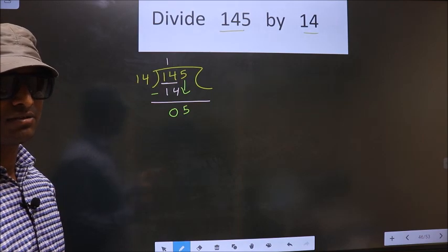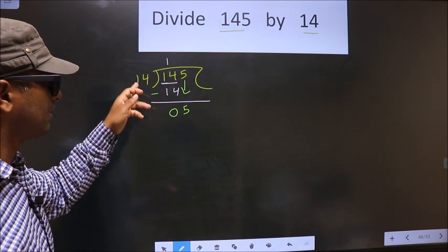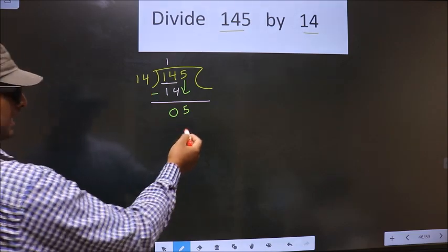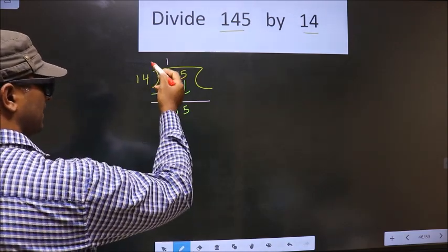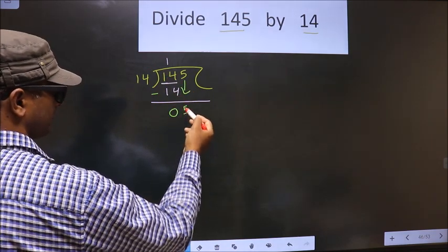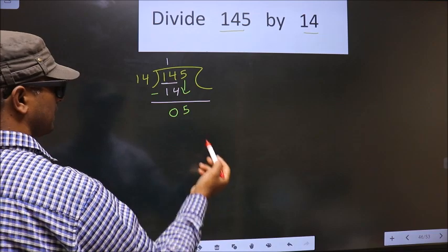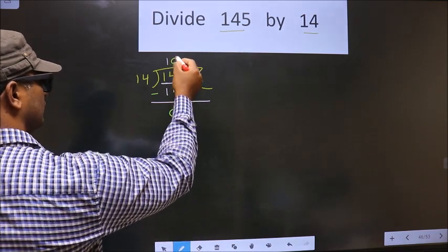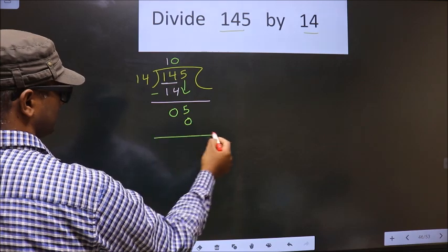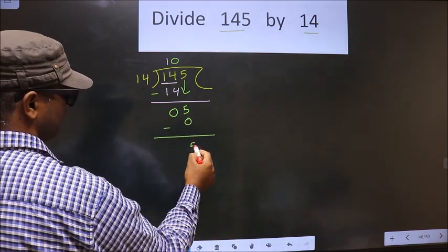Instead, what you should think of is, to this number what should you multiply to get a number here? If we multiply by 1, we get 14 here, but 14 is larger than 5. So what we do is we multiply by 0. So 14 into 0 is 0. Now you subtract: 5 minus 0 is 5.